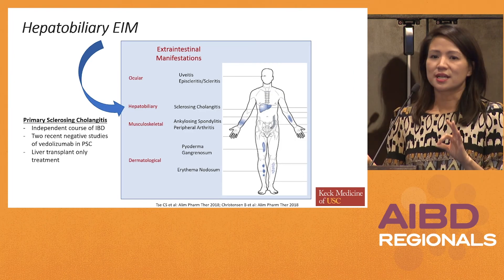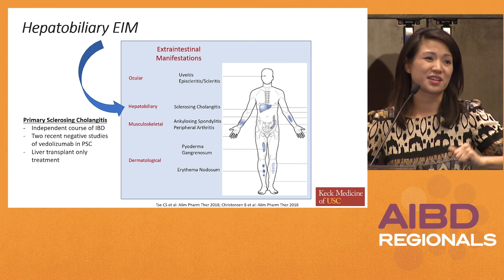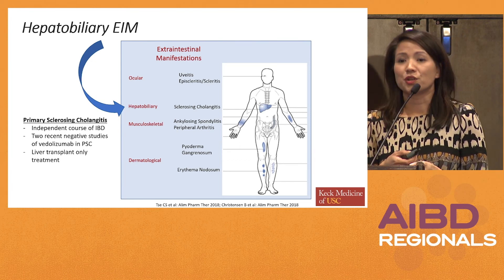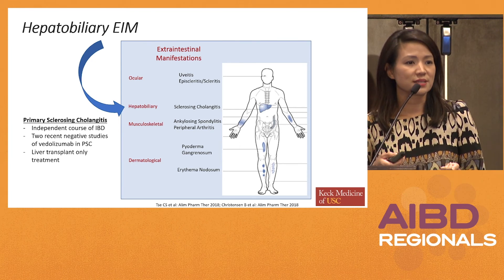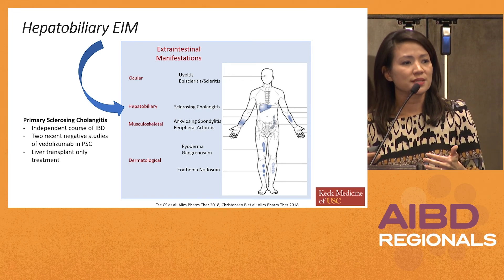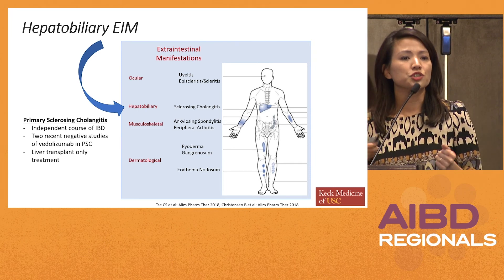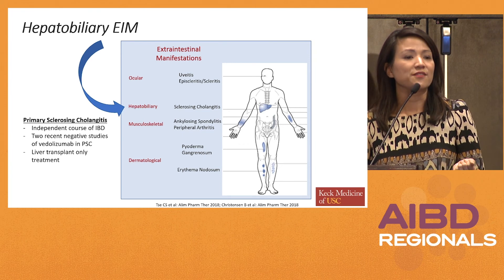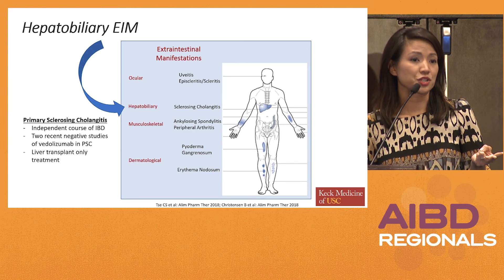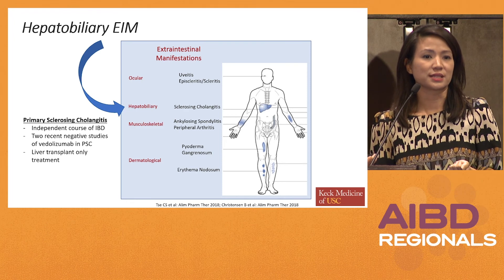Lastly, I'll touch on hepatobiliary complications — PSC — because unfortunately there's nothing really effective in treating this manifestation. It runs a course independent of underlying bowel inflammation. While there was early interest in vedolizumab being effective in PSC, at least two large cohort studies have shown that vedolizumab is not effective in reversing the biochemical or radiological abnormalities in PSC. At this point, the only treatment really is liver transplant.